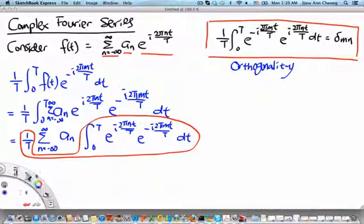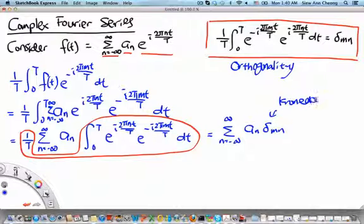This can then be written as equals to the sum going from minus infinity to infinity of a_n delta_mn. Since this particular Kronecker delta is only 1 when n equals m, this is equals to 1 only if m equals n. So when we sum over n, when we let n vary but m fixed, the only coefficient that will be picked up from this sum will be equals to a_m.